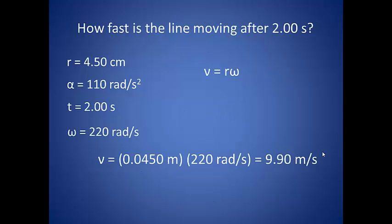Now that we know angular velocity, we can determine the linear speed of the line. Since linear velocity is equal to the angular velocity multiplied by the radius, we just plug in our knowns and calculate. The key here is to not forget to convert centimeters into meters, and we end up with 9.9 meters per second.